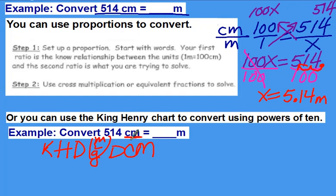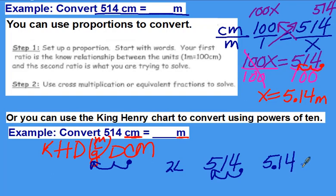In this case, we're going from centimeters to meters. So here's centimeters, we're going to meters. We're going to the left two times. So we have 514, place your decimal. If you don't see your decimal, remember it's at the end of the number. Move your decimal back to the left two times, and you come up with the same answer, 5.14 meters.